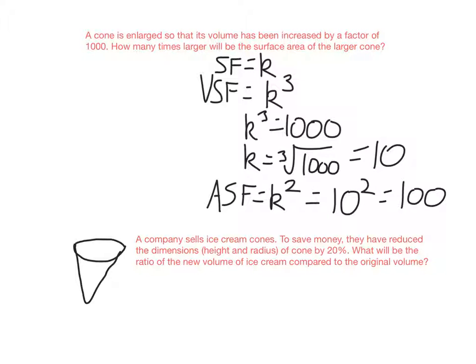Let's look at this question here now. So we're talking about ice cream. A company sells ice cream cones, and they've reduced the dimensions, the height and radius of a cone, each by 20%. And we want to know what the ratio of the new volume of ice cream will be to the old volume. So first, of course, we have to find the scale factor. So we've reduced the dimensions by 20%.